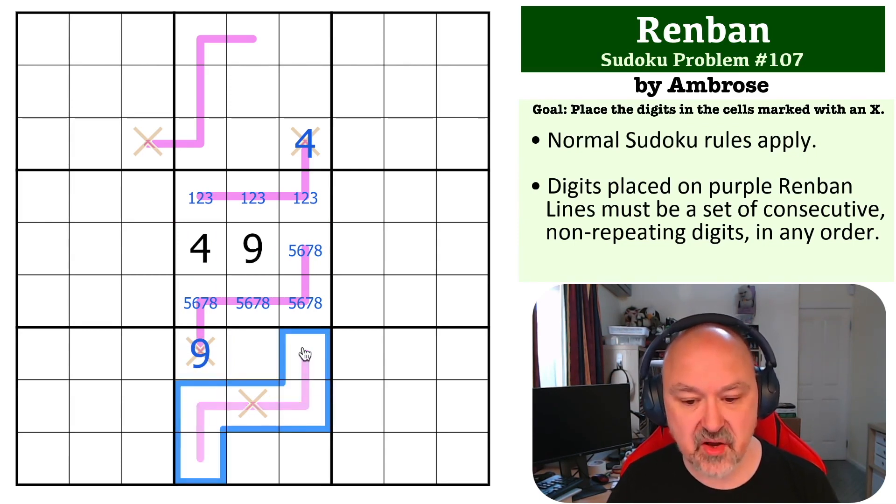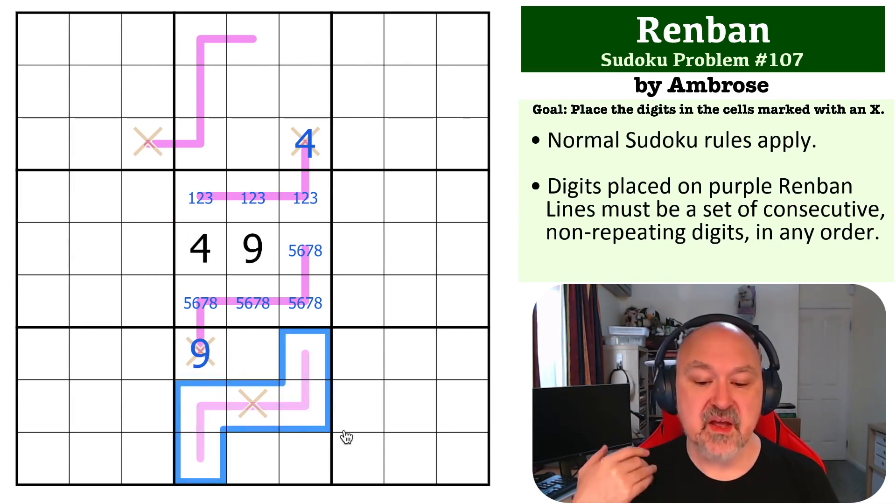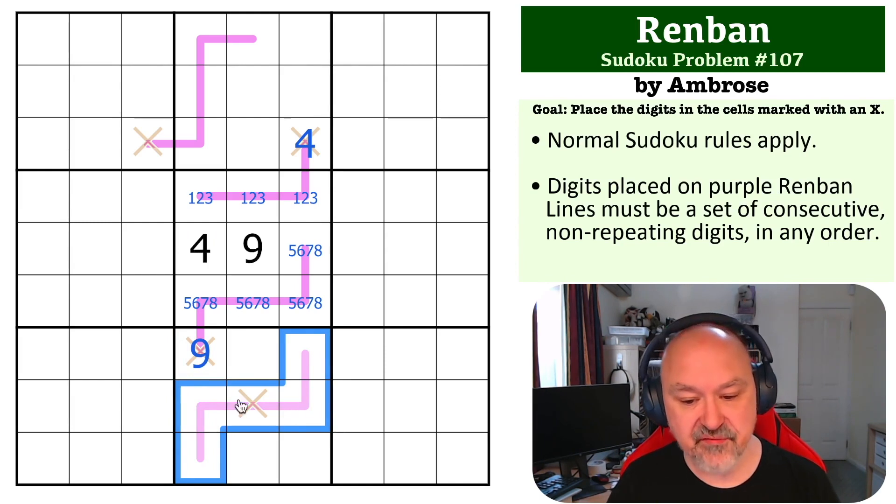Now I have this line to think about. Now this is a five cell long line and every cell in it sees a nine. So if I start at the bottom, it's one, two, three, four, five. And if I start at the top and count down, the top being eight because it sees a nine, it's eight, seven, six, five, four.